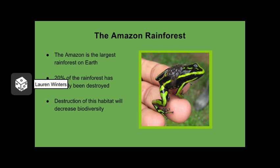If we continue the deforestation of the Amazon rainforest at the rates we are currently experiencing, we will soon lose one of the Earth's most important sources of carbon storage. If this does happen, it will have a dramatic effect on climate change.